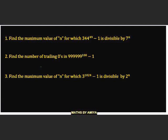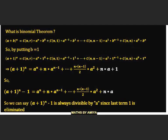Today we try to solve three questions and learn a concept. The first question is: find the maximum value of n for which a number is divisible by 7 raised to power n. The second is: find the number of trailing zeros. Trailing zeros is nothing but the power of 10 which divides the number. When our divisor is some base raised to power n, this is a question of the binomial theorem.